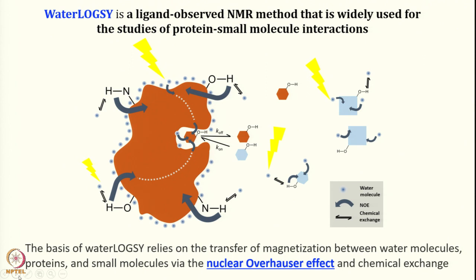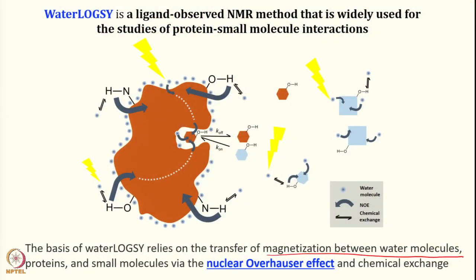WaterLOGSY is an NMR method that observes the ligand and is widely used for studying protein and small molecule interactions. Here we irradiate water. The irradiated water transfers magnetization through nuclear Overhauser effect and chemical exchange to bound water, protein, and ligand. Transfer of magnetization between water molecules, protein, and small molecules happens by NOE because they are in close proximity. Irradiating water: magnetization gets transferred to protein, then to ligand if it is a binder. That is the essential concept of WaterLOGSY.